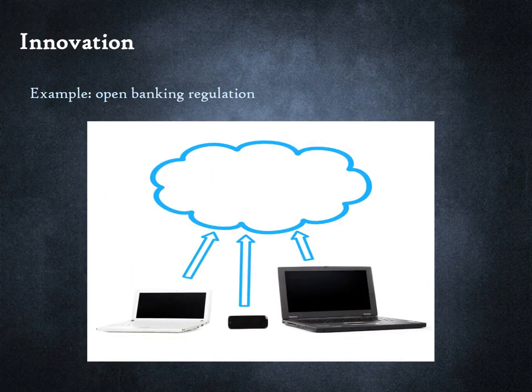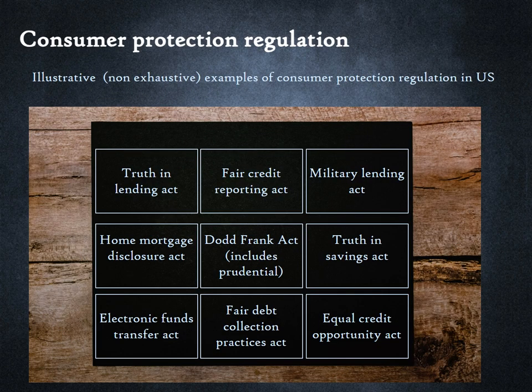The focus of regulation can also be to promote innovation. For example, open banking regulation in Europe and the UK required large banks to allow secure access via APIs to third parties, subject to customer consent. This allows third parties to offer services and competition to banks — for instance, a peer-to-peer payment app can connect to the bank account of a user to seek authorization for a payment, allowing the user to make a payment without logging into her own bank account.